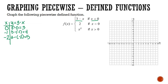Plugging in: 3 minus 0 is 3. 3 minus negative 1 is 4. And 3 minus negative 2 is 5. When I graph this, there will be an open circle at x equals 0 because we cannot equal it. So when x was 0, y was 3. At negative 1, we were at 4. And at negative 2, we were at 5. Then the second piece says if x equals 0, your y is 2 — that's just a single point at (0, 2).